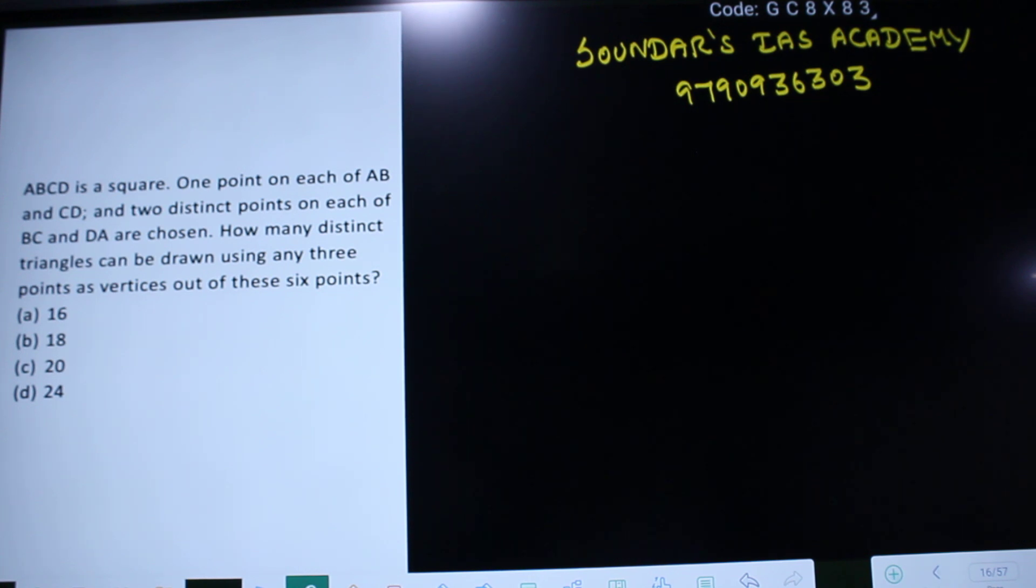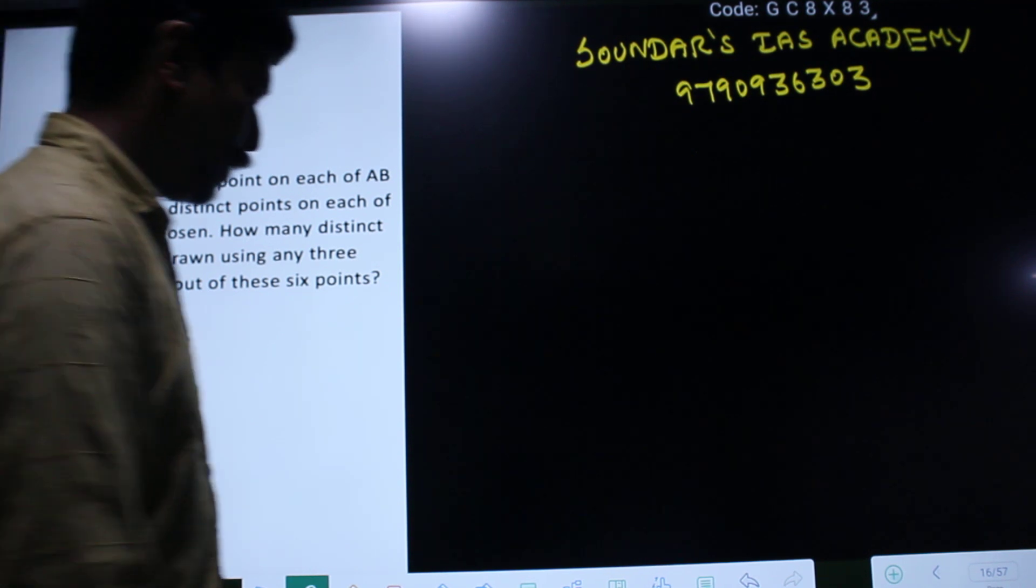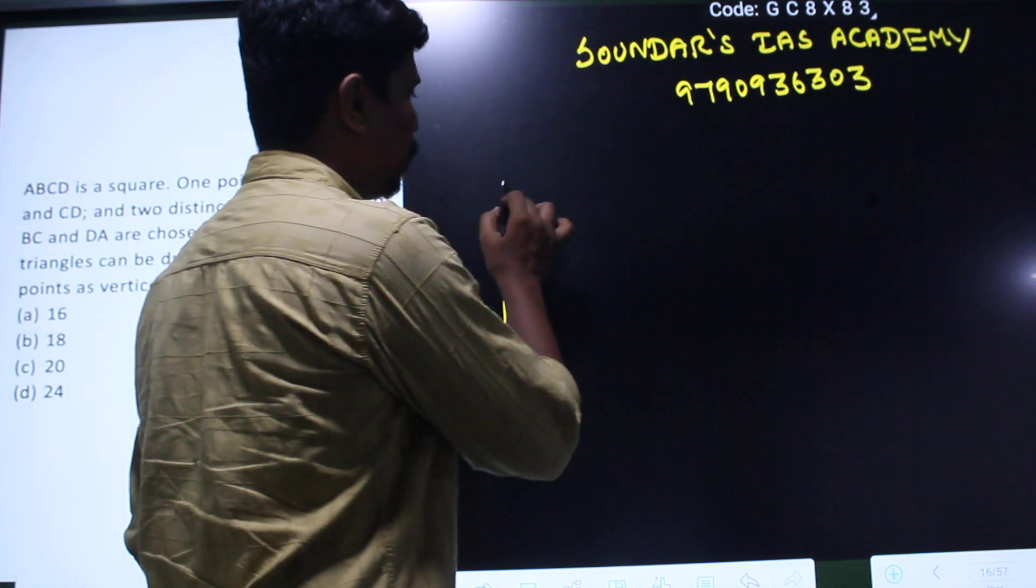How many distinct triangles can be drawn using any three points as vertices out of these six points? ABCD is a square.